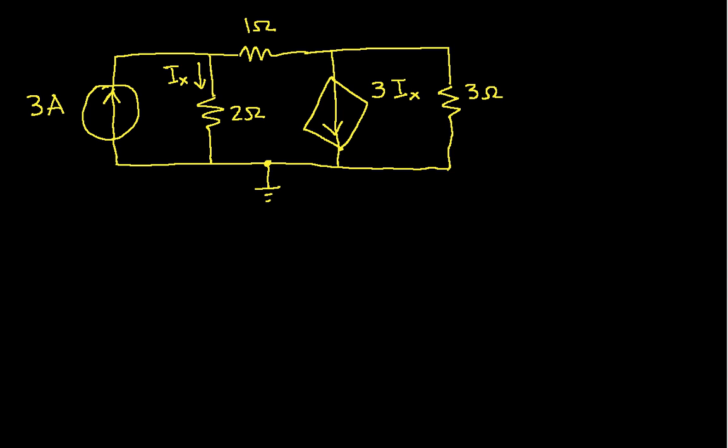Step 2 is to label the node voltages. So I have a node here, and I'll label the voltage at this node V1. And I have a second node here, and I'll label the voltage at this node V2. Two steps done, two steps to go.